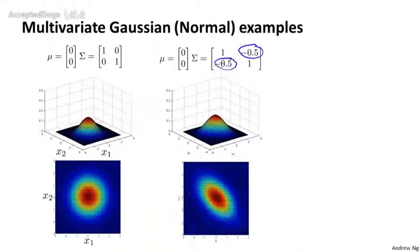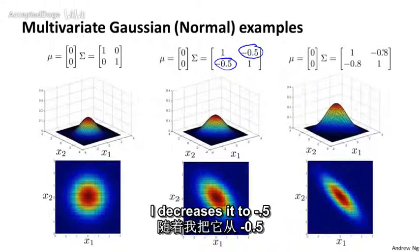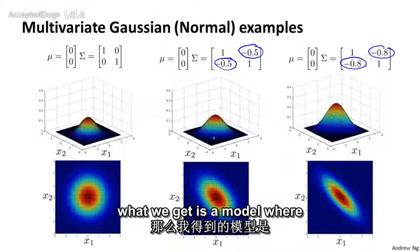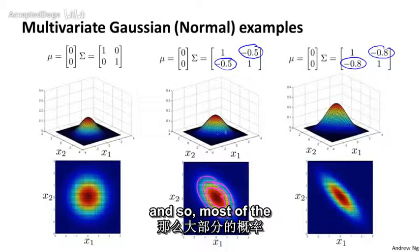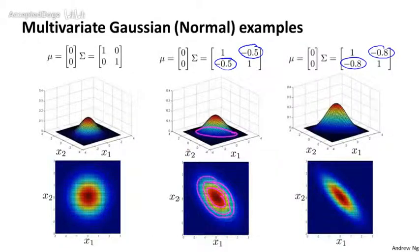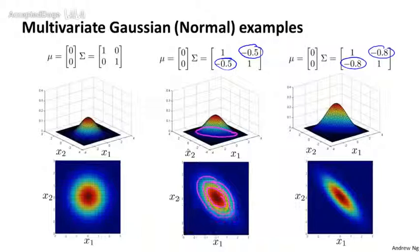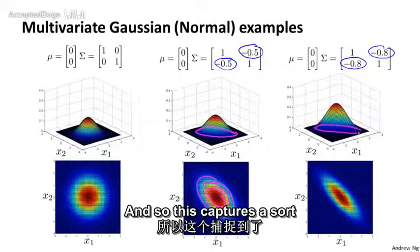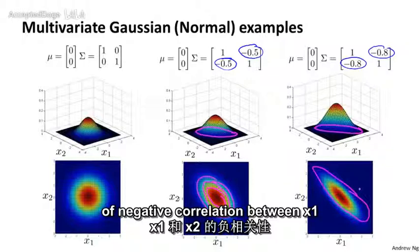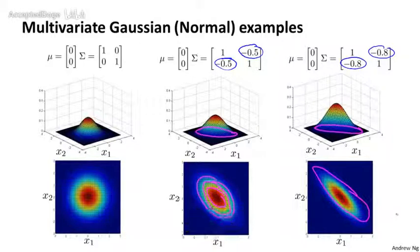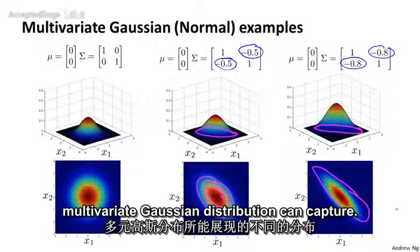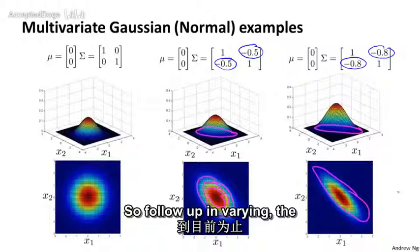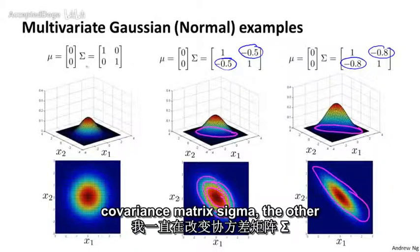So this is if we set these entries to be positive entries. In contrast, if we set these to negative values, as I decrease this to minus 0.5 down to minus 0.8, then what we get is a model where we put most of the probability in this sort of negative x1 and x2 correlation region. And so, most of the probability now lies in this region where x1 is about equal to minus x2 rather than x1 equals x2. This hopefully gives you a sense of the different distributions that a multivariate Gaussian distribution can capture. So far we've been varying the covariance matrix sigma.